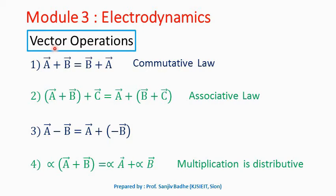We will revise some of the vector operations. You must be familiar with all these vector operations — I will just revise them once again. So if we have two vectors a bar and b bar, then addition of these two vectors follows a commutative law. So a bar plus b bar can be written as b bar plus a bar. While adding the vectors, we can swap them and still the result will be the same.